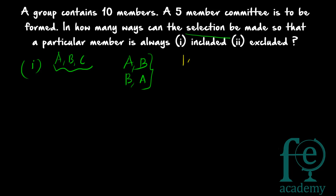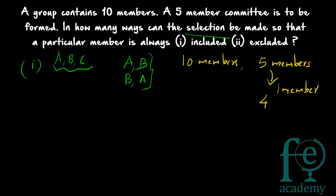There are 10 members and you have to select 5, which can normally be done in 10C5 ways. But here a particular condition is given: one member is always included, meaning that member is already in the committee. So there is no need to select that member. Only 4 more members need to be selected from the remaining 9 members.